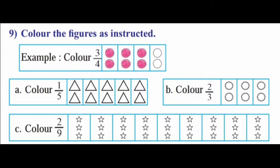9th main. Color the figures as instructed. Example, color 3 by 4. 4 parts are there, color 3 parts. So A, color 1 by 5. 5 parts are there, you should color 1 part. Color 2 triangles. Color 2 by 3. 3 parts are there, color 2 parts.